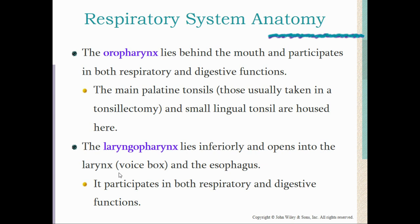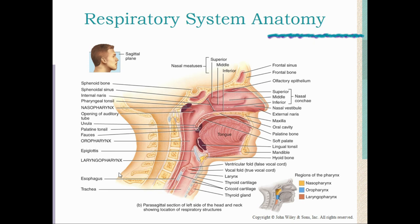This diagram shows everything involved in the upper respiratory tract, including the nasal cavities, in a cross section of someone's head. You can see the tongue is attached to the epiglottis — when the back of the tongue rises during swallowing, it pulls down on the epiglottis, which covers the opening to the trachea so food goes down the esophagus. When we breathe, the epiglottis stays open and air rushes down into the trachea.